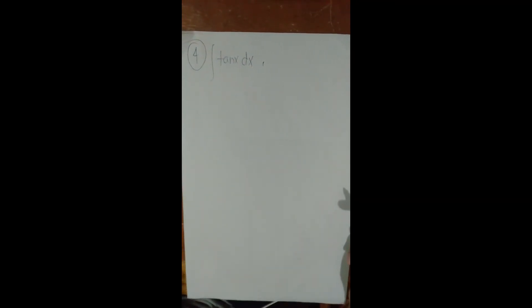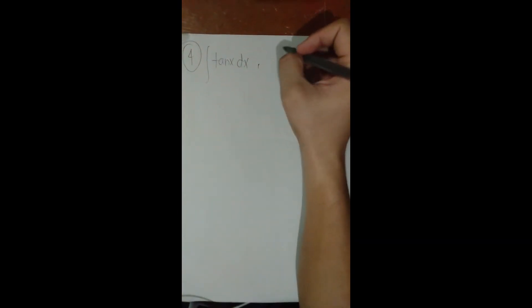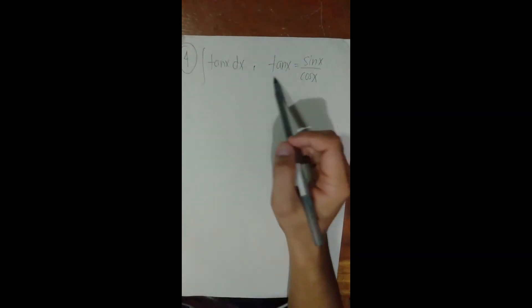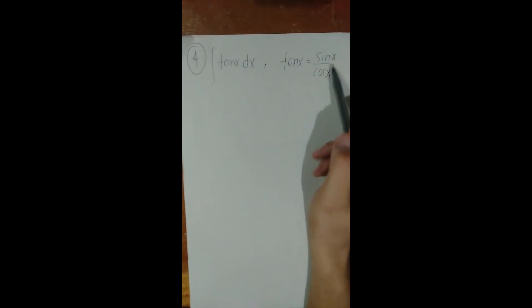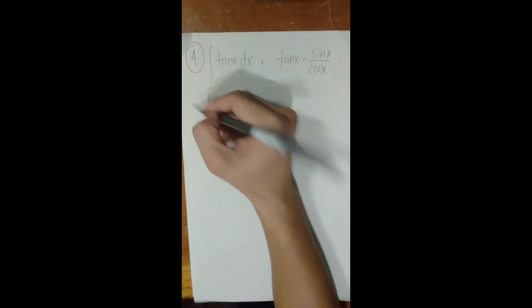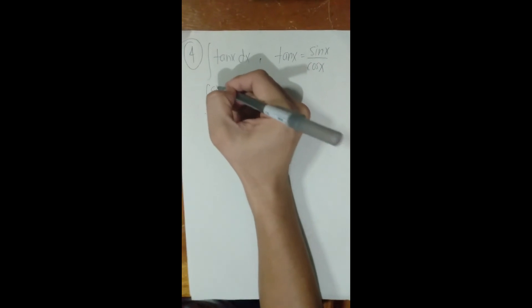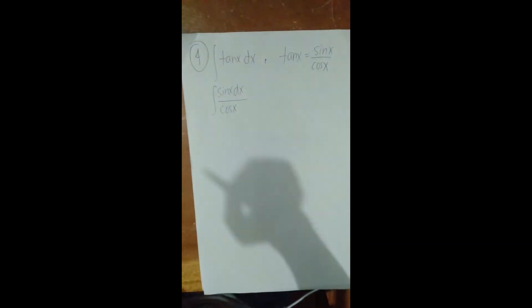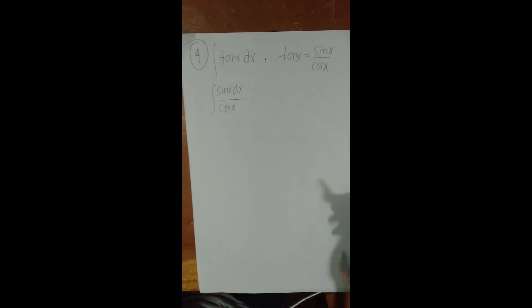To perform substitution on integral of tan(x) dx, we apply a trigonometric identity. The identity is: tan(x) = sin(x)/cos(x). So we replace tan(x) with its identity, and the function becomes the integral of sin(x) dx / cos(x).